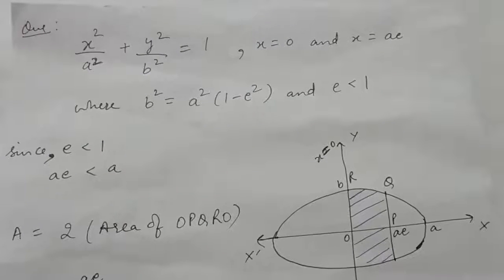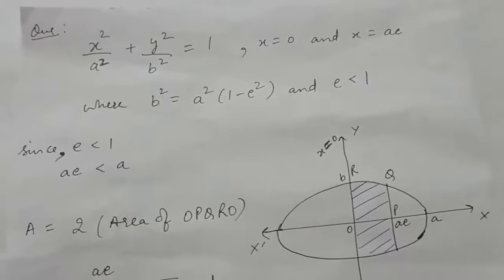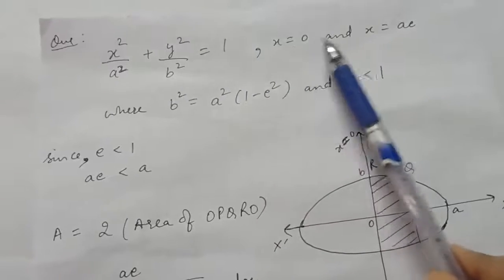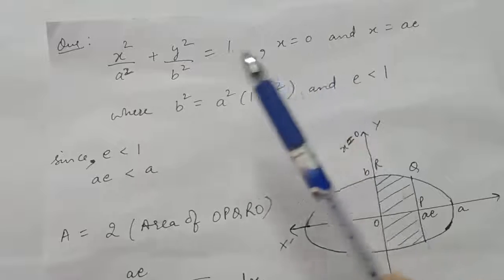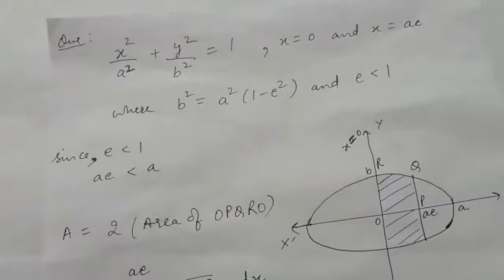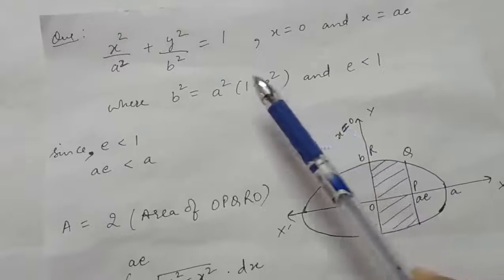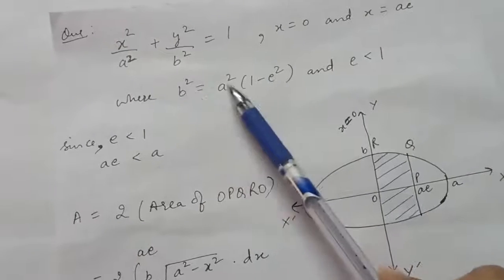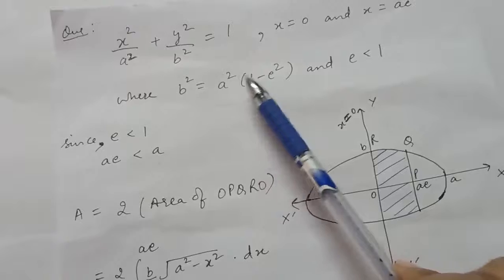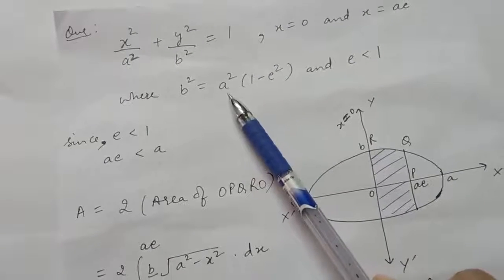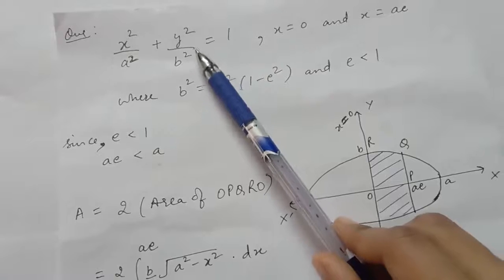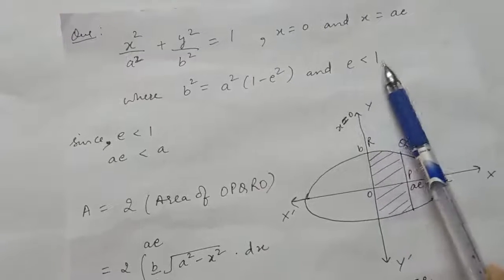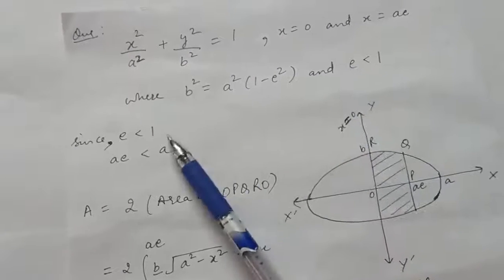In this question, find the area bounded by x²/a² + y²/b² = 1 and the lines x = 0 and x = ae, where b² = a²(1 − e²). Since b² = a² − a²e², b² is less than a², so the major axis is the x-axis. Since e < 1, ae < a, so the line x = ae lies to the left of x = a.